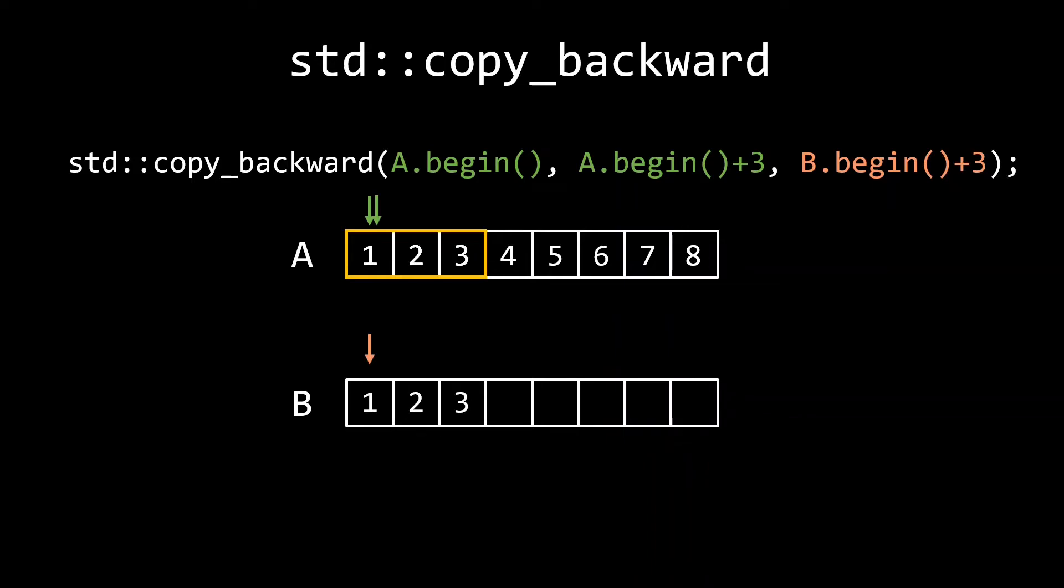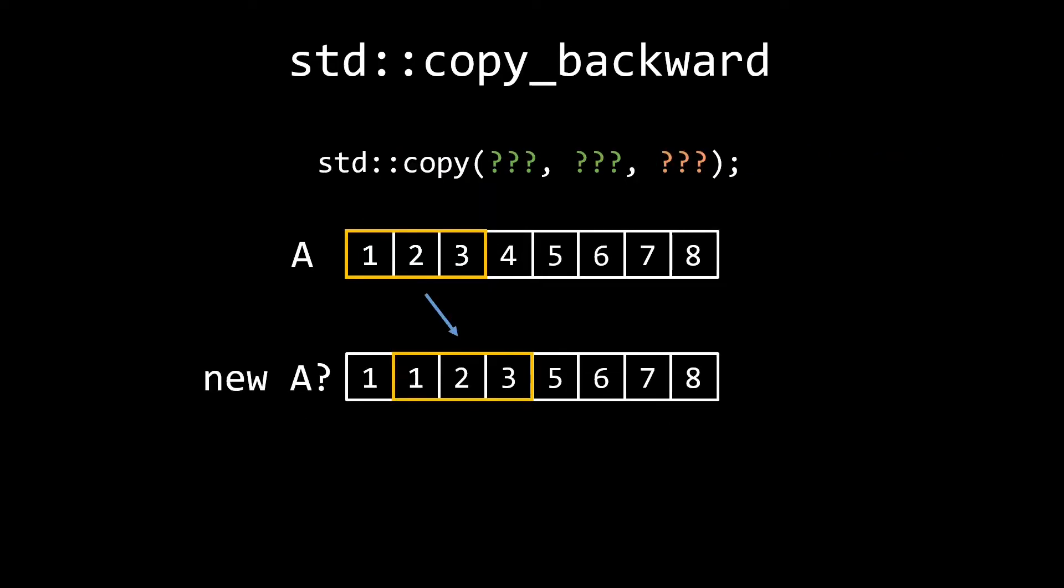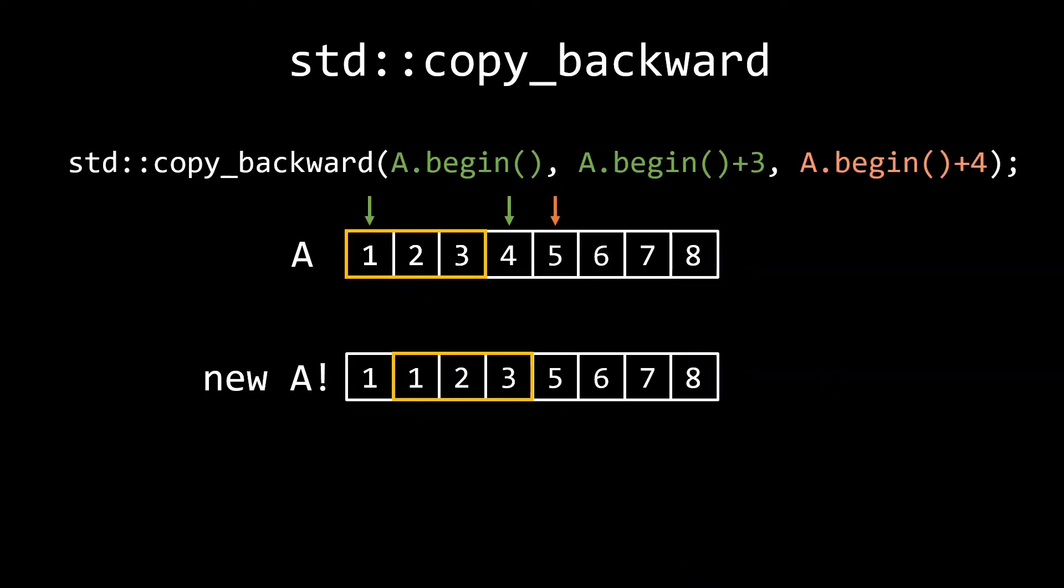A result of this is that we can use copy_backward when we want the destination range to overlap with the source range. Remember how we tried but failed to copy the elements 1, 2, and 3 to the positions with index 1 through 3? We couldn't do this with a normal std::copy, as the destination iterator needs to be outside of the input range. The same holds true for the destination iterator in copy_backward. But since the copying happens backward, we can have the destination range overlap the source range. We can achieve the goal of updating our A container to the new configuration by specifying A.begin() plus 4 as our destination iterator.